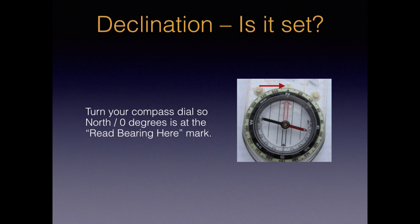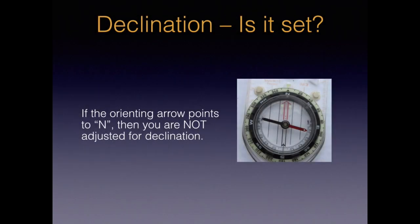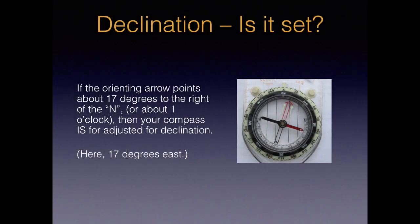Also, some of you may have a compass with adjustable declination but you're not sure if it's set correctly. Here's how to tell: turn your compass dial so north is at the read-bearing-here mark. If the red orienting arrow points exactly to north, or zero degrees, then your compass is not adjusted for declination — that's what we see in this photo. However, if the red orienting arrow points off to the left or the right of N, or zero degrees, then your compass is adjusted for declination. An east declination would have the red orienting arrow pointing off to the right, or the one o'clock position. A west declination would have the red arrow pointing off to the left, or more towards the eleven o'clock position. If you want more details, we have a video on the complete process — video number nine, adjusting declination on your compass.